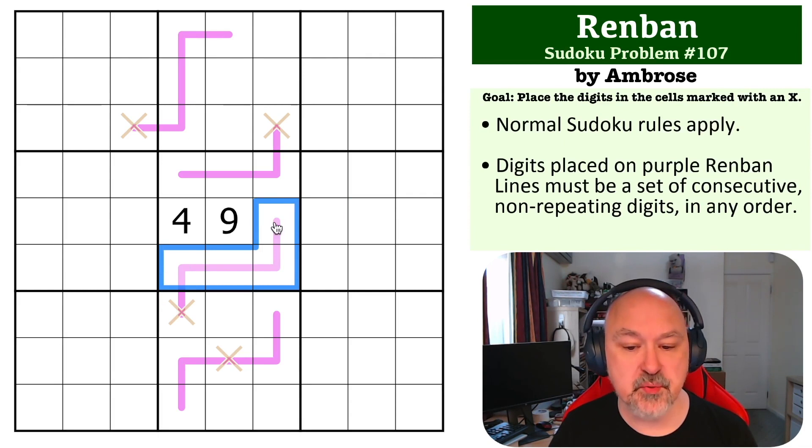So to be one, if I was to put a one on this line, it would need to be one, two, three, four, five. I can't go down. But this four sees all of this line. So I could not put one, two, three, four, five on this line.